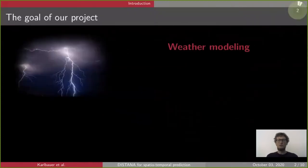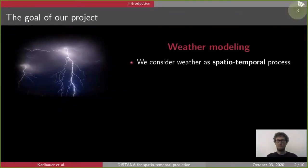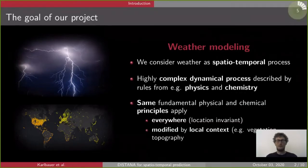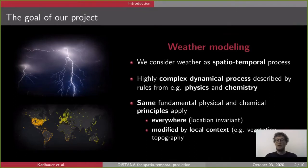We want to model spatiotemporal processes because we consider weather as one of these, and as you probably know, weather can be seen as a highly complex dynamical process described by principles from physics and chemistry. A crucial component is that the same fundamental physical and chemical principles apply everywhere on earth — they are spatially location invariant — and these principles can be modified by local contexts such as vegetation or topography.